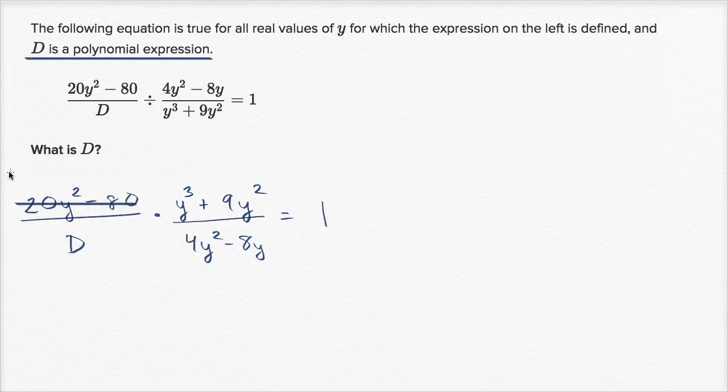So this is going to be the same thing as 20 times y-squared minus 4, and y-squared minus 4 we can rewrite as y plus 2 times y minus 2, it is a difference of squares.